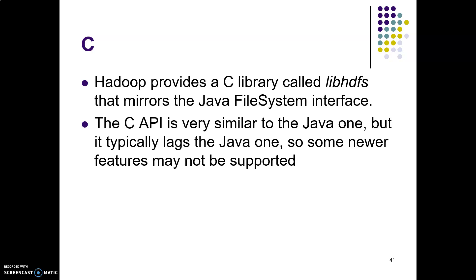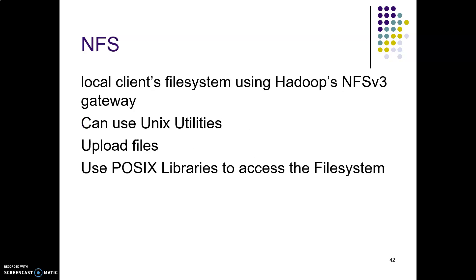The next interface is for C programming. Hadoop provides a C library called 'libHDFS' which mirrors the Java FileSystem interface. Java also uses some native C language in the backend. The C API is very similar to the Java one, but it typically lacks some newer features because C is the older language, so some newer Java features may not be supported — which is a drawback of using the C library.